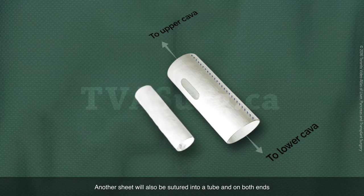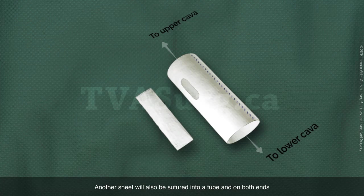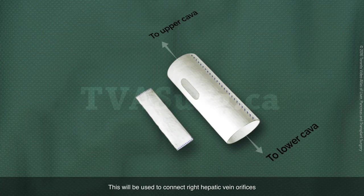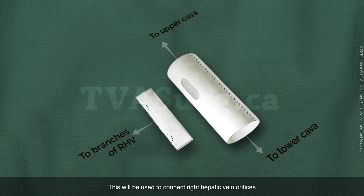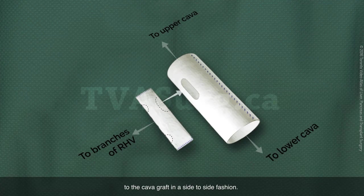Another sheet will also be sutured into a tube on both ends. This will be used to connect the right hepatic vein orifices to the cava graft in a side-to-side fashion.